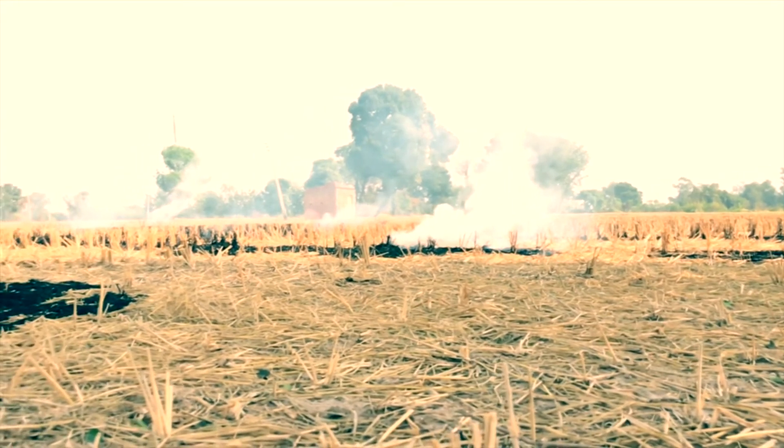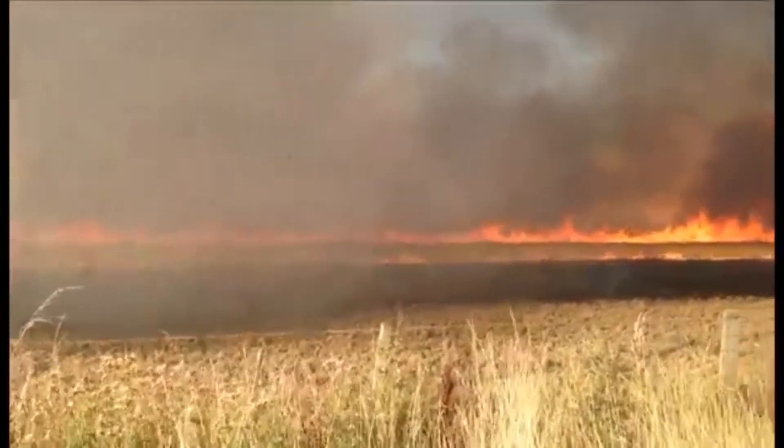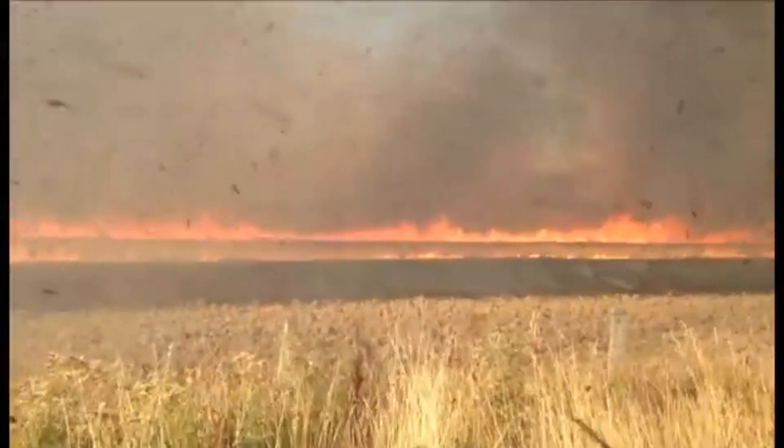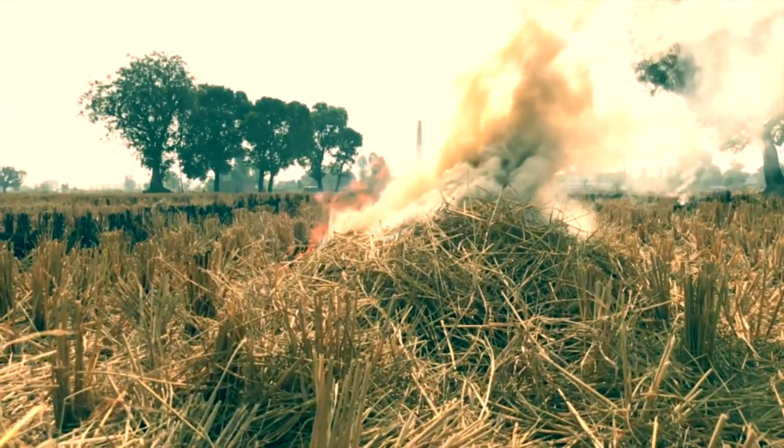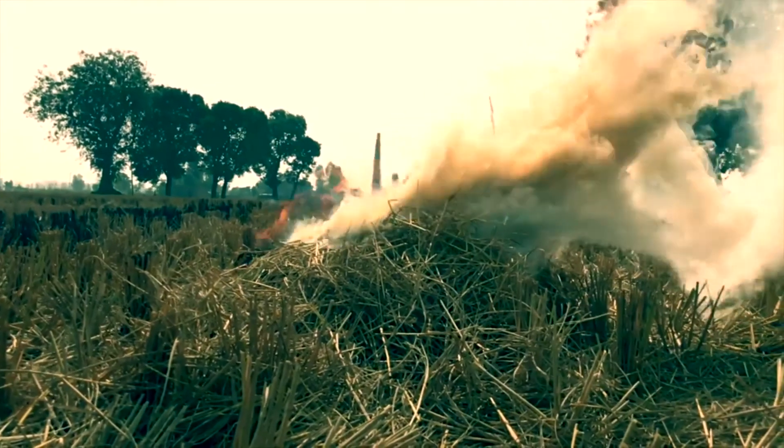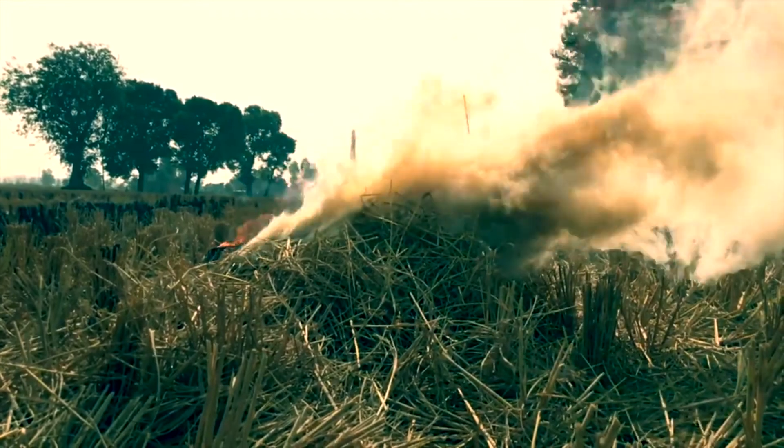Burning of the rice chaff, known as stubble, that is left over after harvesting contributes heavily towards increased air pollution and poor air quality levels in major parts of the country. It is estimated that 35 million tons of stubble is burnt every year in order to facilitate the next crop. Researchers found that this process released around 149 tons of dangerous gases.